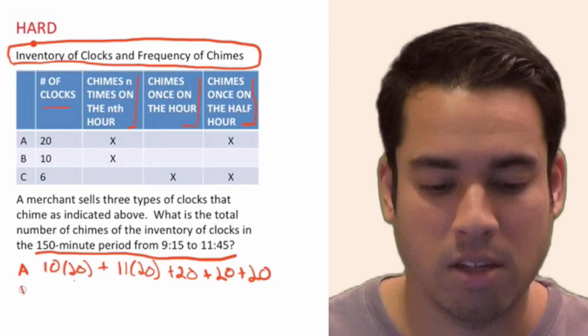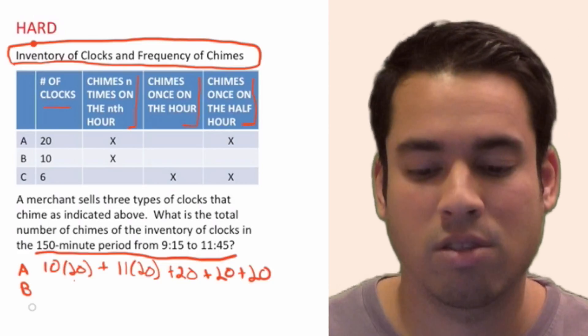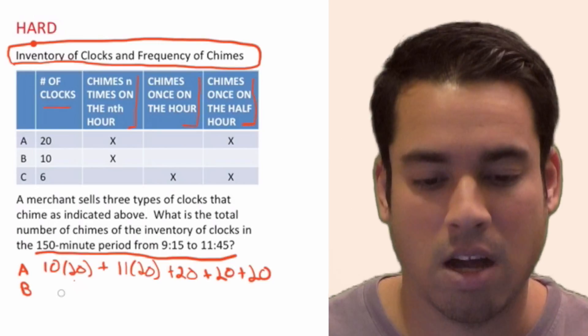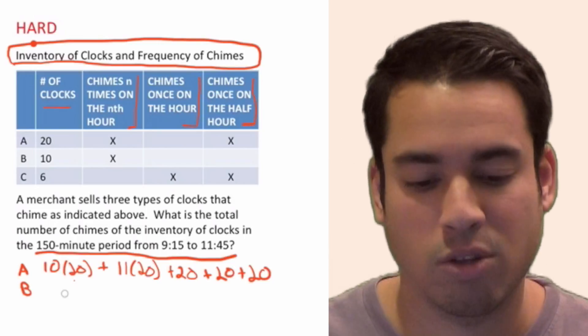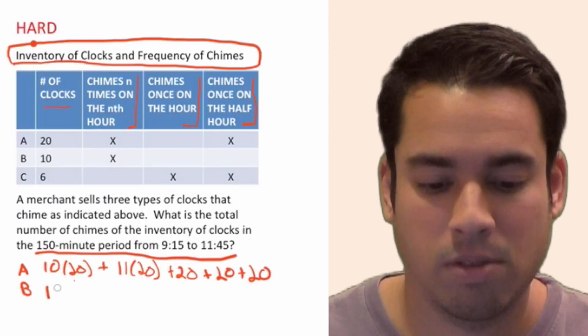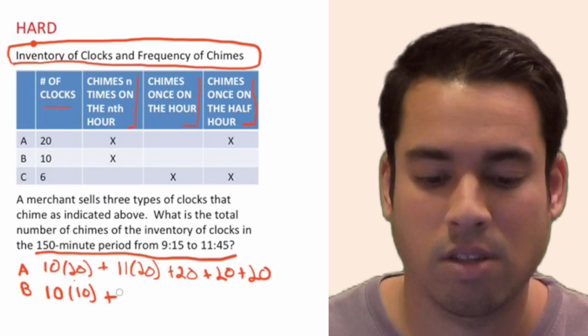Now let's think about B. For B, we've got 10 clocks. So again, we're going to start at 10 o'clock and 11 o'clock for the n times on the nth hour. So at 10 o'clock, these clocks are going to chime 10 times, and that's times 10 clocks, plus 11 times at 11, again, times 10. And that's it. We're done with B.